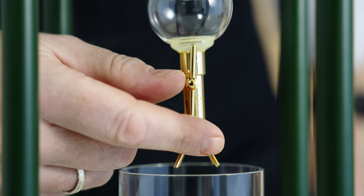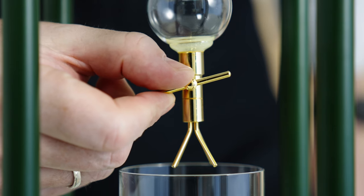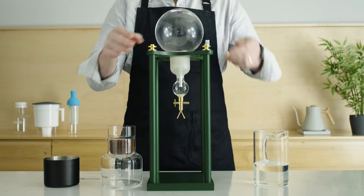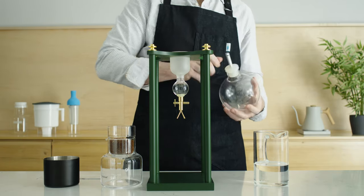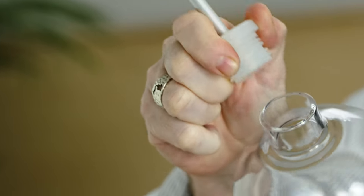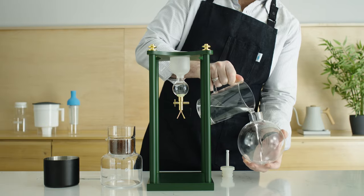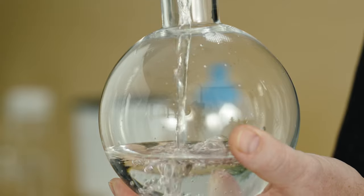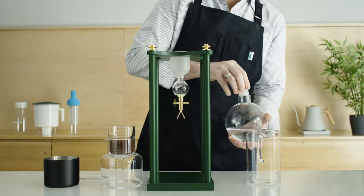Next, make sure the spigot is in the off position by turning the spigot valve clockwise. Now lift the glass globe off the tower and remove the rubber stopper. Fill the globe with 245 grams of room temperature water and gently replace the stopper.